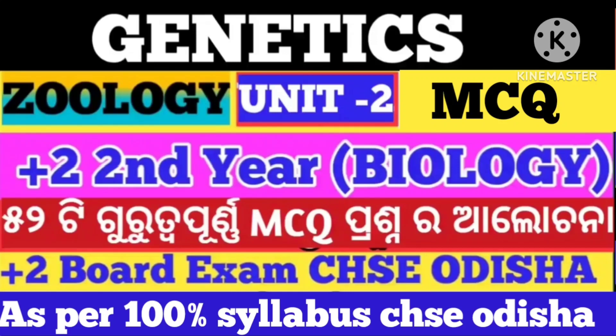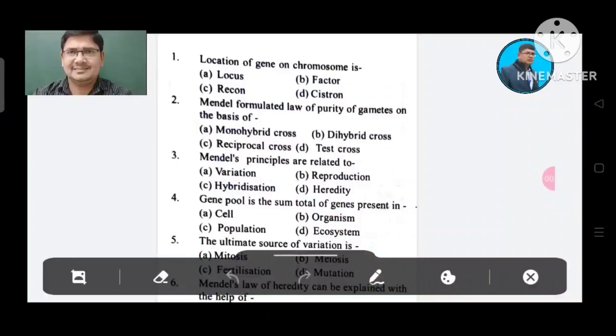In the first question: Location of gene on chromosome. Options: A. Locus, B. Pector, C. Recon, D. System.